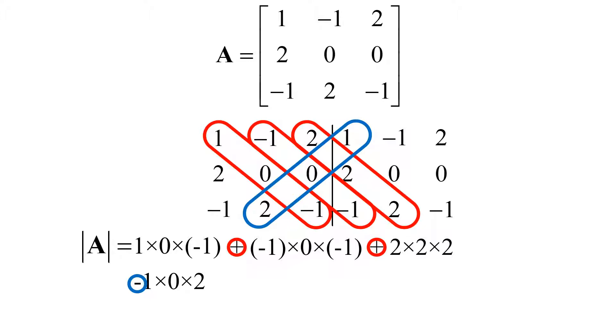For the fourth column, you have 1, 0, and 2. For the fifth column, you have minus 1, 2, and minus 1. Finally, for the sixth column, you have 2, 0, and minus 1. Again, you need to subtract them.